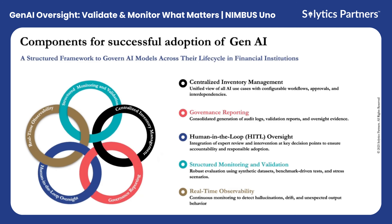Our framework is built on five pillars: centralized inventory management, governance reporting, human-in-the-loop oversight, structured monitoring and validation, and real-time observability — ensuring end-to-end lifecycle control of AI systems in enterprises.